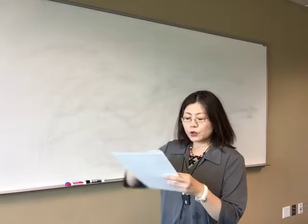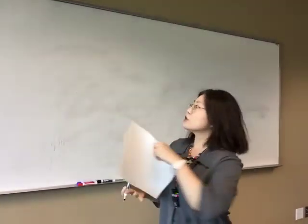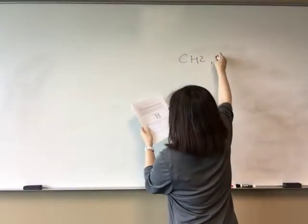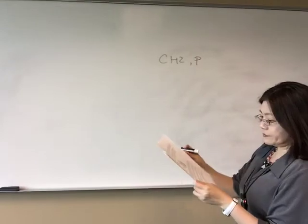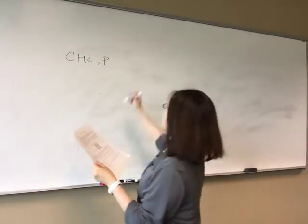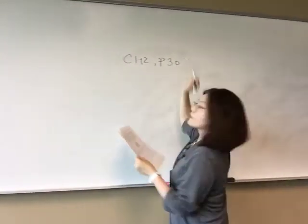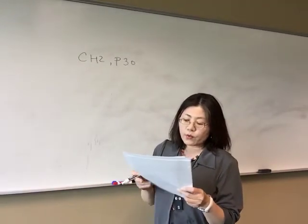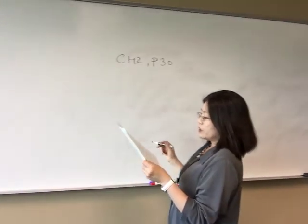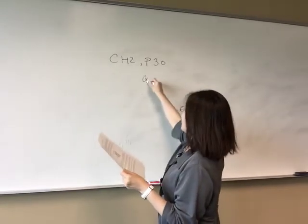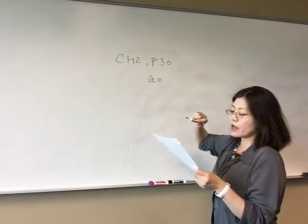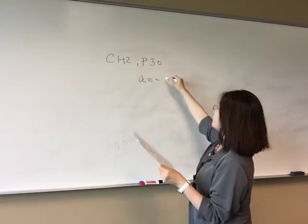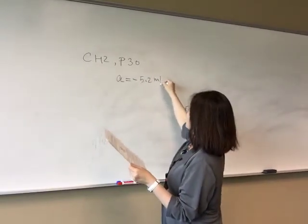Moving on to the next problem, chapter 2, problem 30. The brakes on your car can slow you at a rate of 5.2 meters per second squared. So the acceleration, because it slows you down, should be negative — negative 5.2 m per second squared.